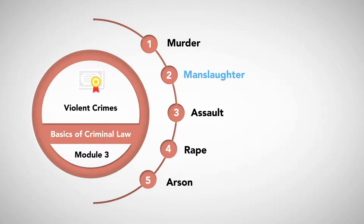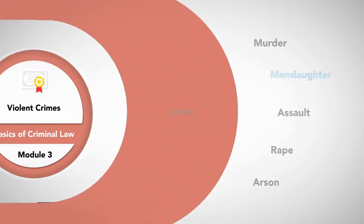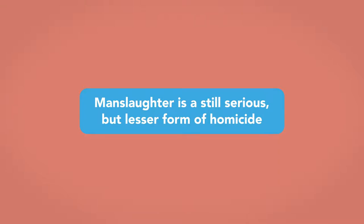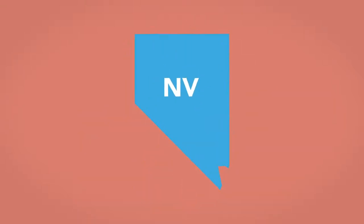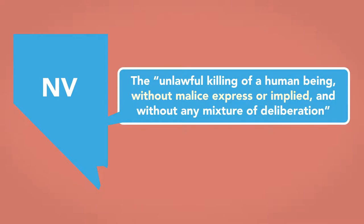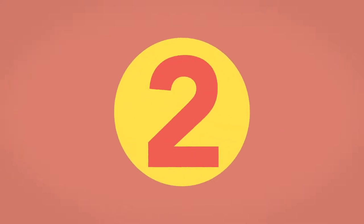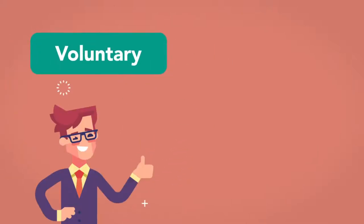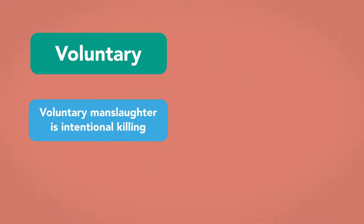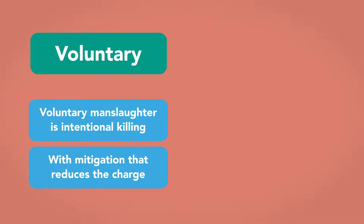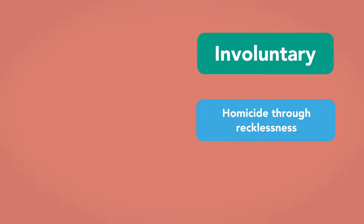While murder means homicide with malice aforethought, manslaughter is still a serious but lesser form of homicide. For example, Nevada defines manslaughter as the unlawful killing of a human being without malice expressed or implied, and without any mixture of deliberation. Manslaughter is typically broken down into two categories: voluntary and involuntary. Voluntary manslaughter is intentional killing, but with some form of mitigation that reduces the charge from murder. Involuntary manslaughter means homicide through recklessness, or in some states negligence, but with no malice aforethought.